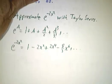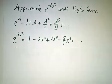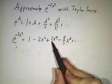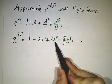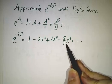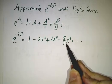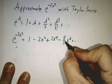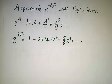And we get that e to the minus 2x squared is 1 minus 2x squared plus 2x squared squared over 2, that's 2x to the fourth, minus 2x squared cubed over 3, cubed over 6, that should be 6, and so on.